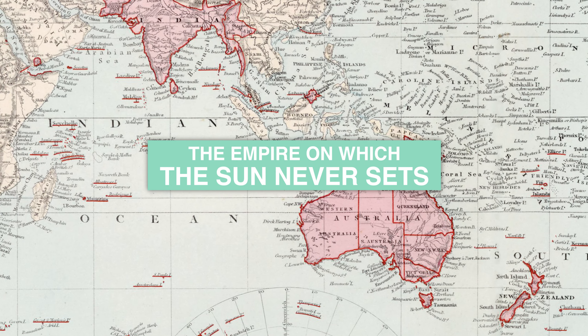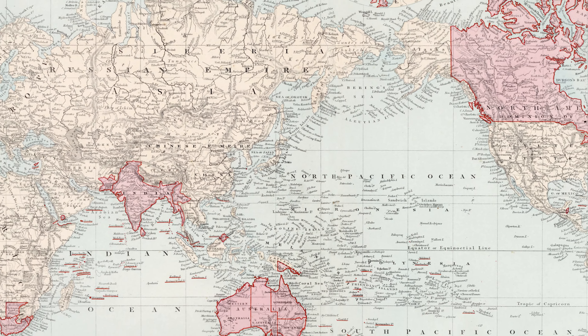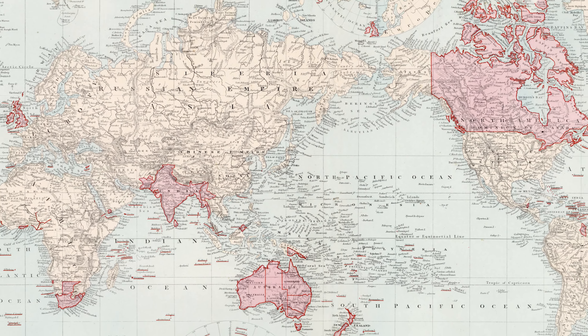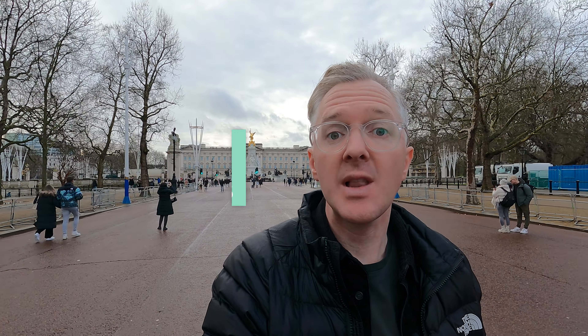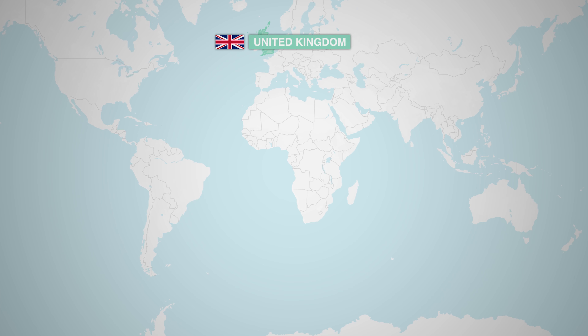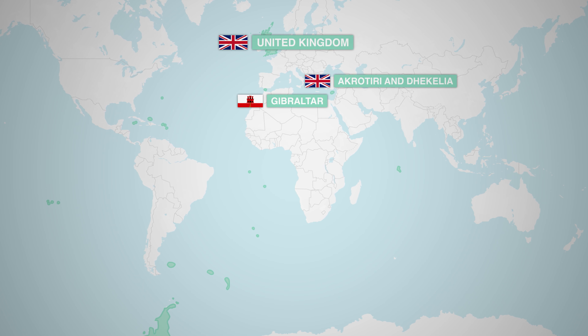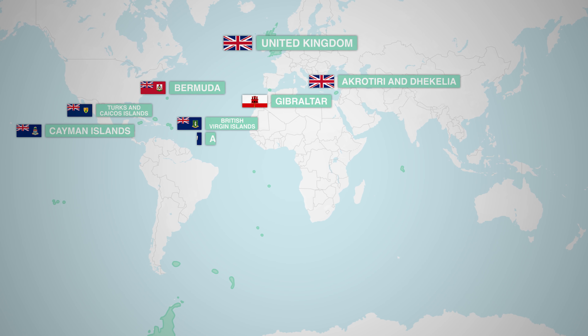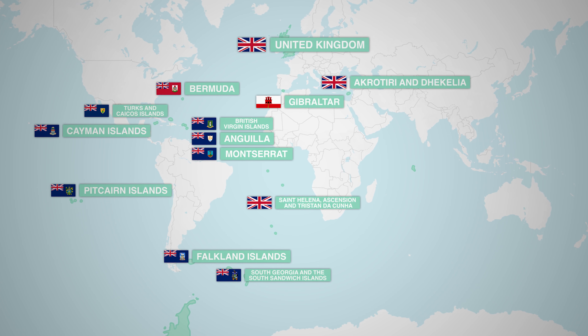Whilst its reach has reduced somewhat today, the legacy of the British Empire remains across numerous international locations. The British Overseas Territories, sometimes termed United Kingdom Overseas Territories, are the last of those within the empire not directly forming part of the United Kingdom. Formerly known as British Crown Colonies, these 14 sites retain the British monarch as head of state, and rely on the UK for its defence, but are otherwise self-governing bodies.